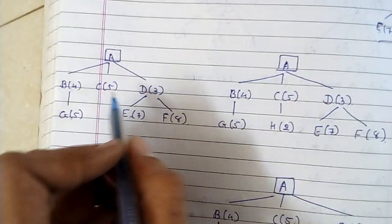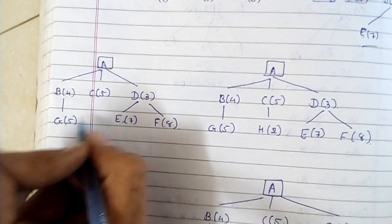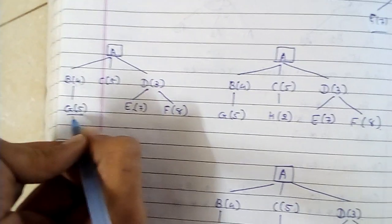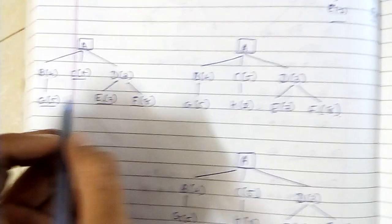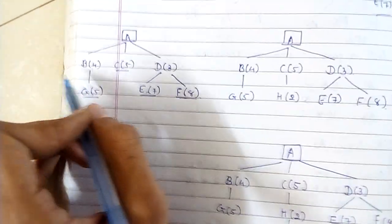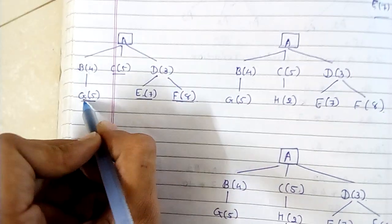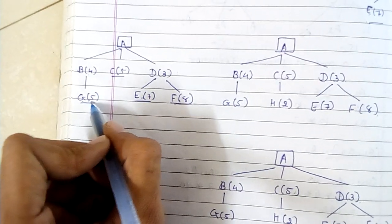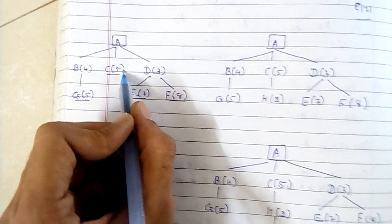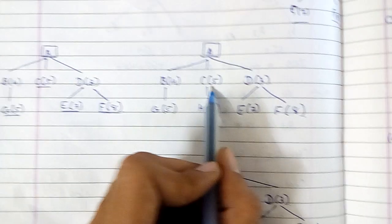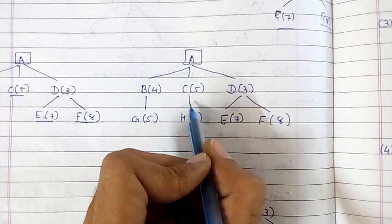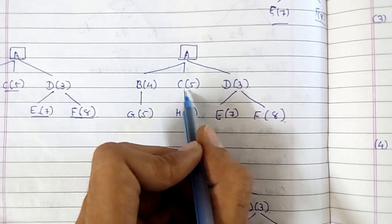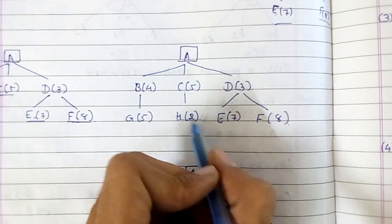B is generating G, and we also have E and F. Now I have to search from nodes G, C, E, and F. You will observe that G and C have the same value, both are 5. You can consider any of them. Here I am considering C for the next move.